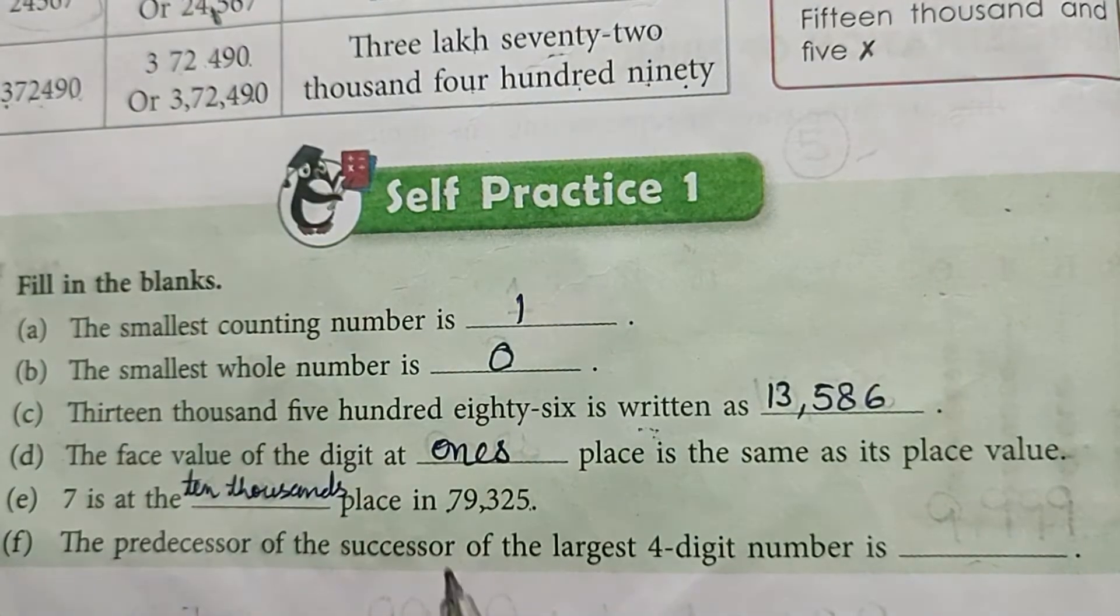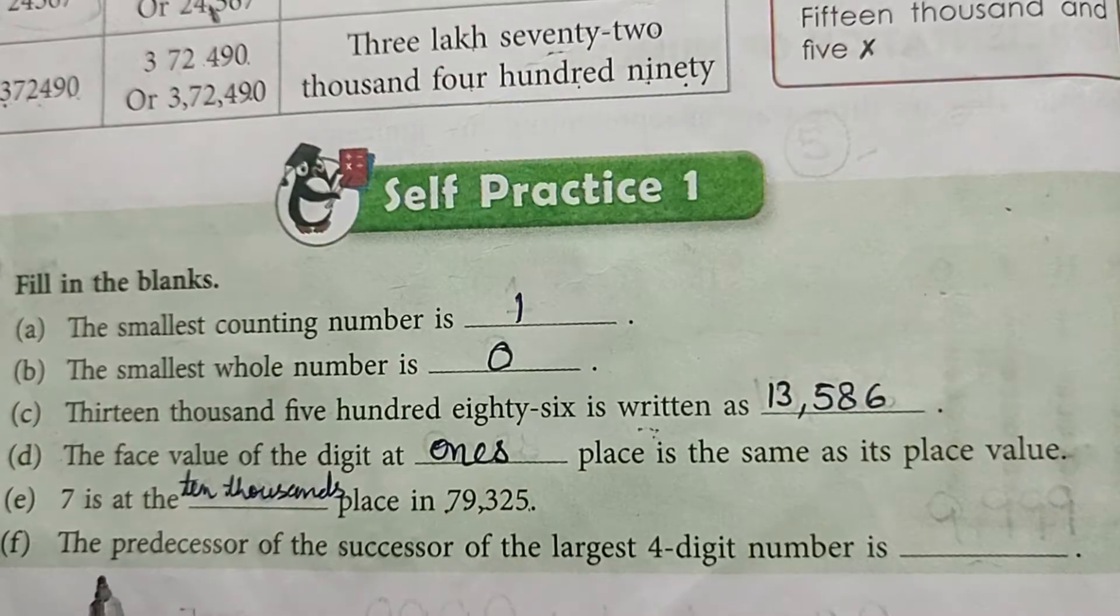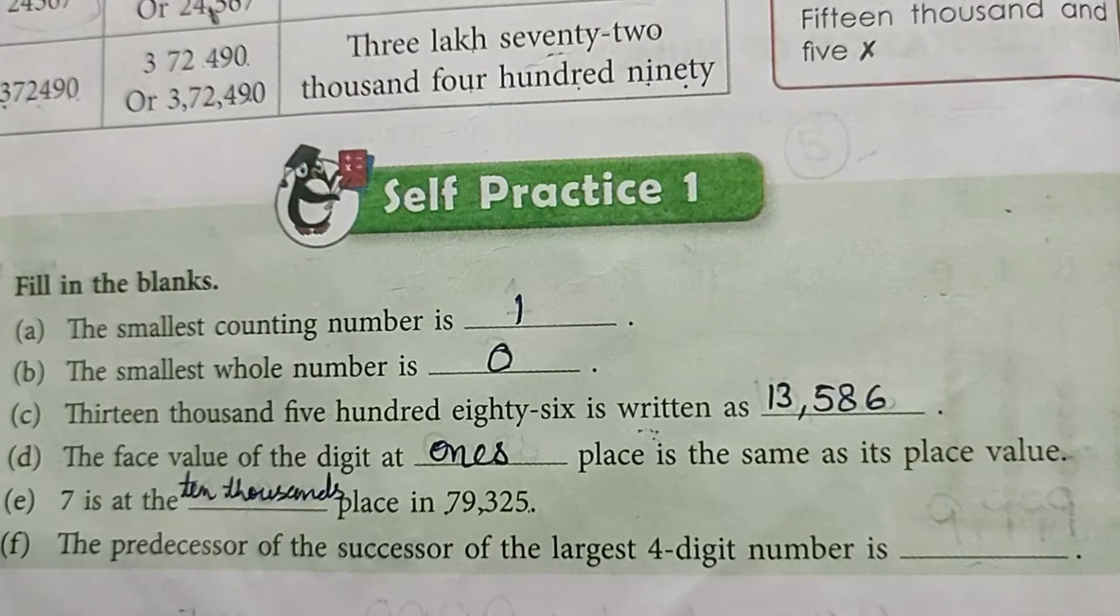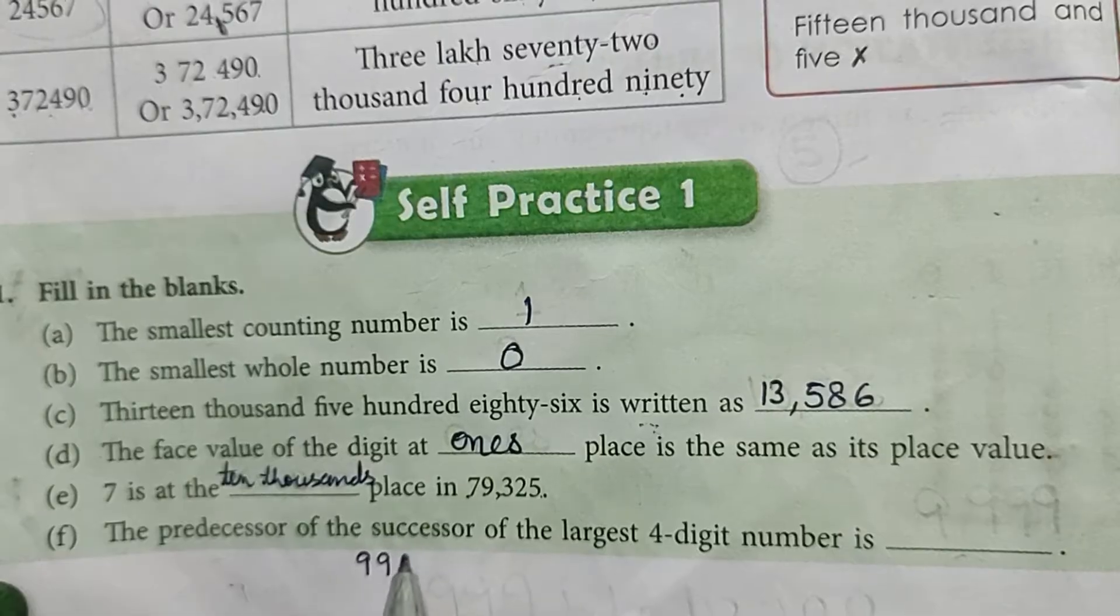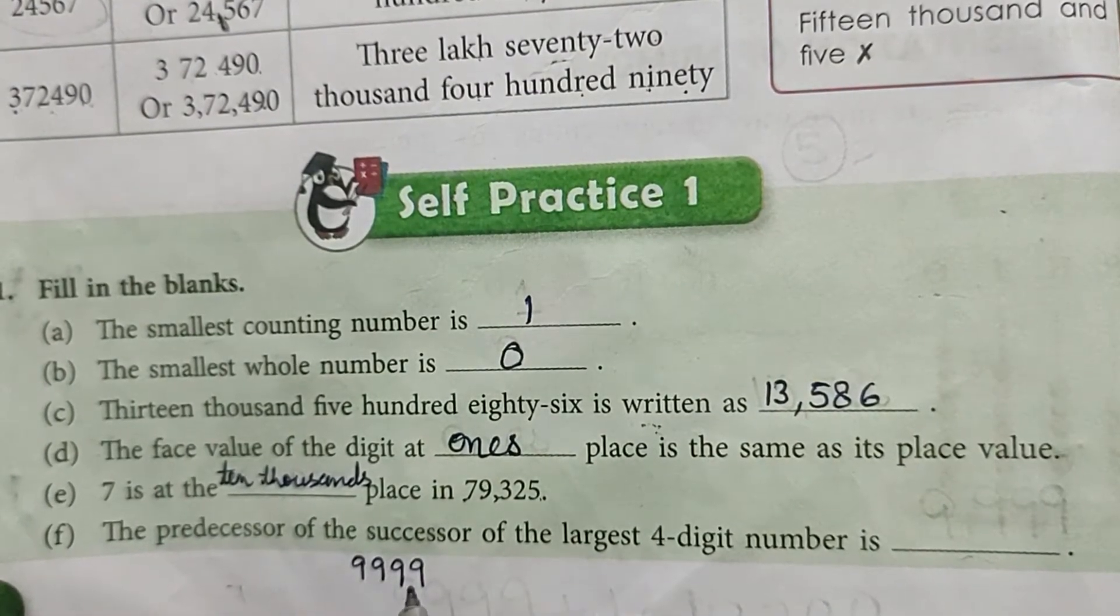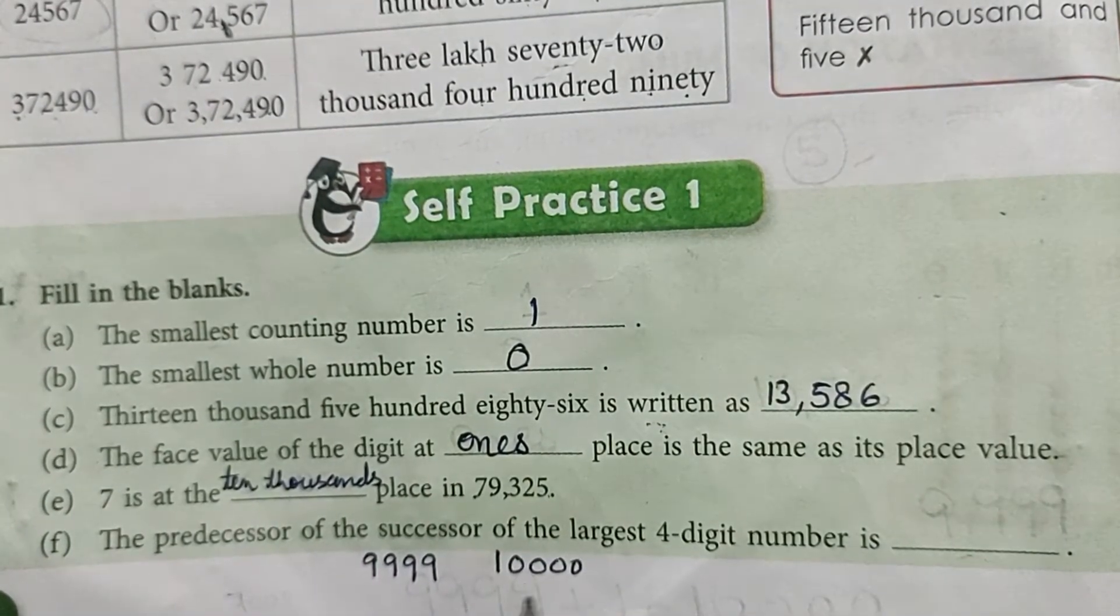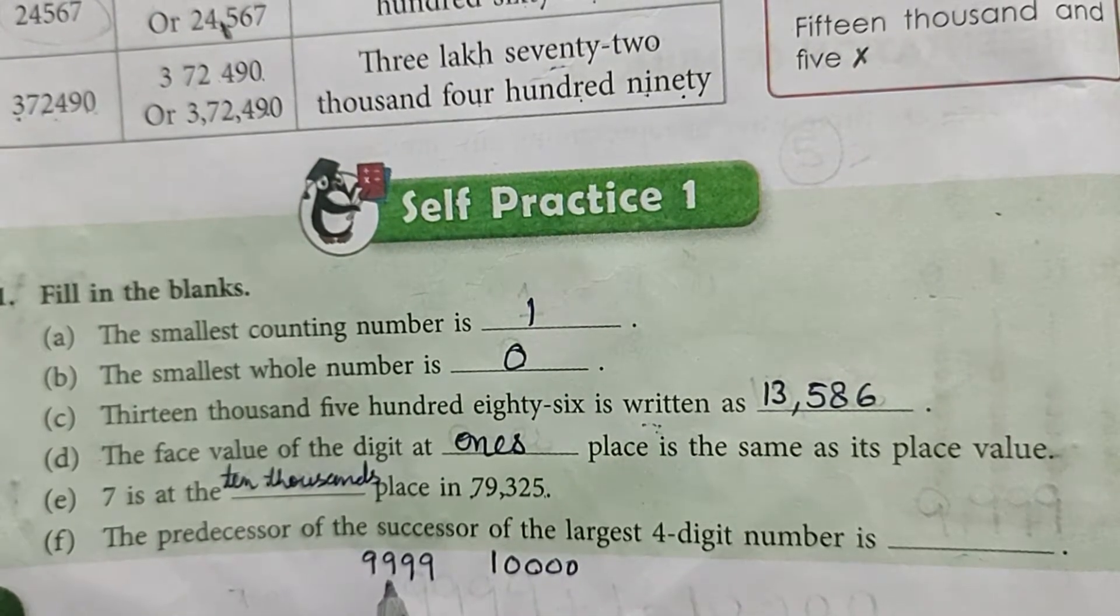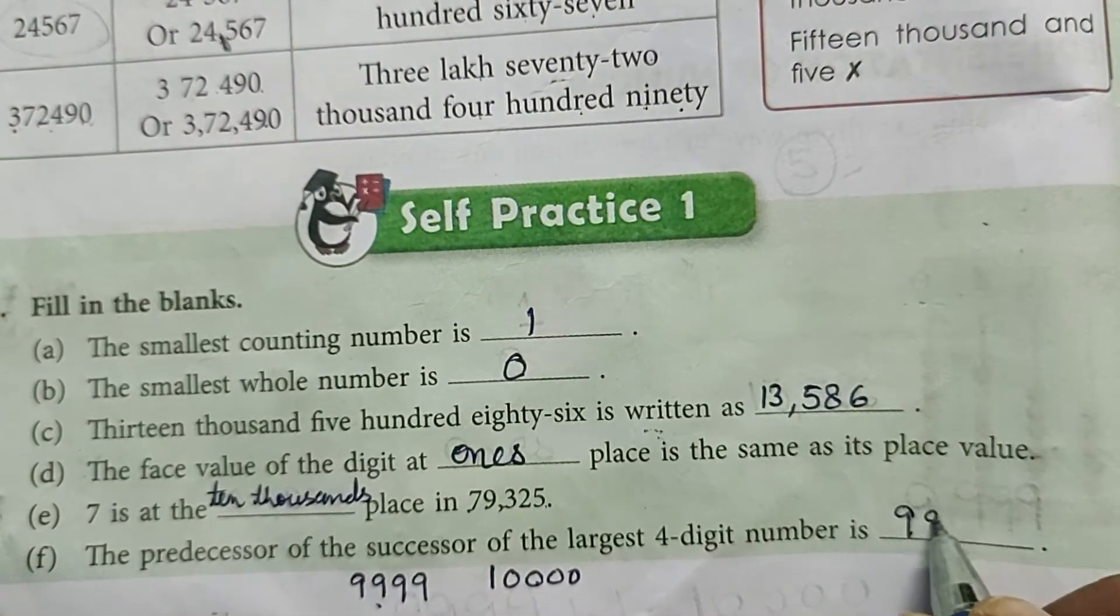The predecessor of the successor of the largest four-digit number. So first, the largest four-digit number is 9999. Now the successor of this is 10000. Now the predecessor of this is again the largest four-digit number, so the answer is 9999.